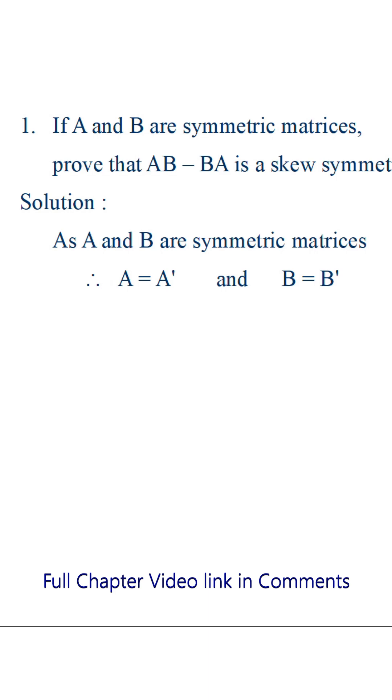To prove that AB minus BA is a skew symmetric matrix, we will find out its transpose.